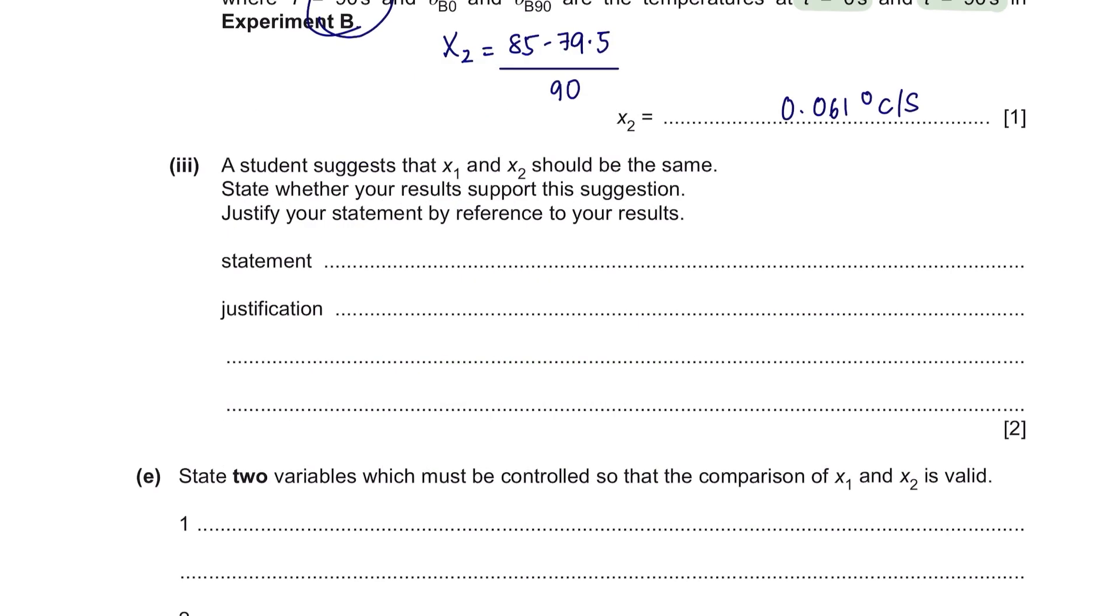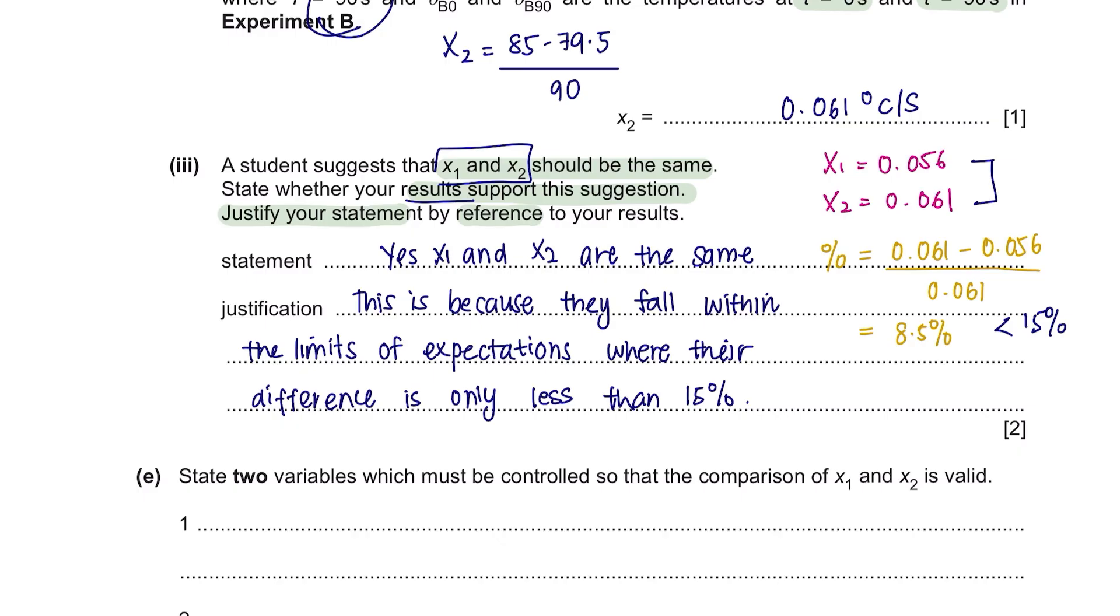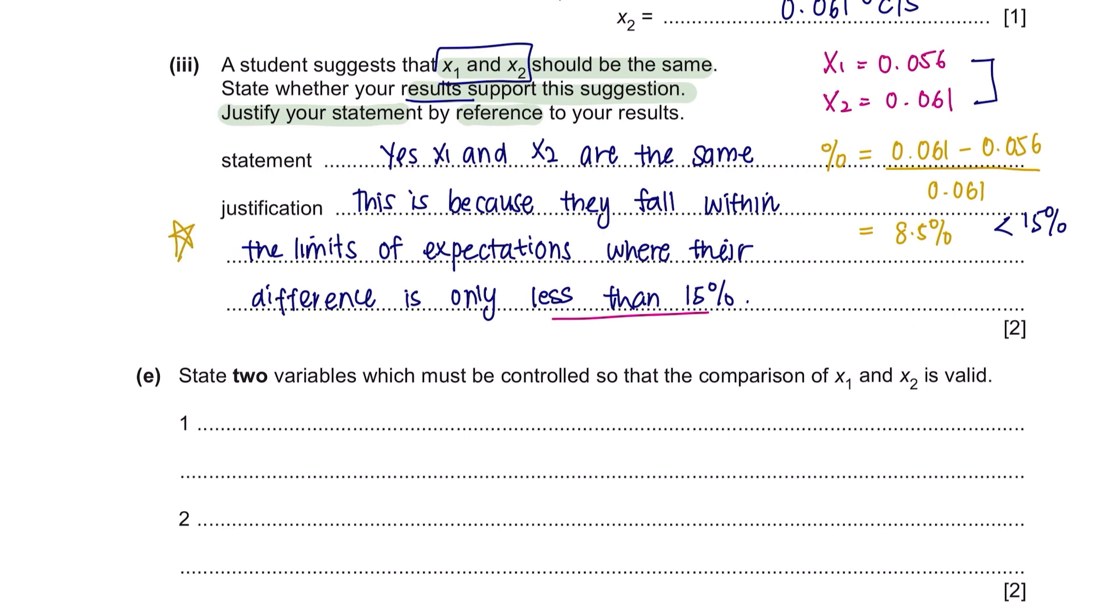Question 3. A student states that X1 and X2 should be the same. State whether your result supports this suggestion and justify your statement by reference to your results. Let's find out whether X1 and X2 are the same. They are slightly different, but you need to find out, in percentage, how different they are. They have a difference of 8.5%, which is lesser than 15%. Therefore, we can say that the results of which X1 and X2 are the same is indeed true. For justification, you could mention that this is because they fall within the limits of expectations, where their difference is only less than 15%. Please note that for this type of question, when they ask you to justify, please don't just leave your answer by mentioning that they fall within the limits of expectation. Make sure to also include a calculated value to prove your statement.